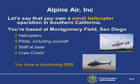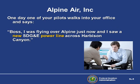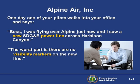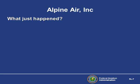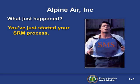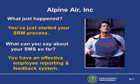You have a functioning SMS. So let's see how it works. One day, one of your pilots walks into your office and says, 'Boss, I was flying over Alpine just now and I saw a new power line across Harbison Canyon. The worst part is, there are no visibility markers on the new line.' So what has just happened? You have just started your safety risk management process. You have an effective employee reporting and feedback system.